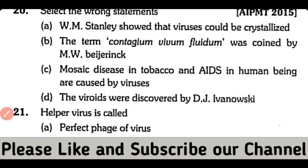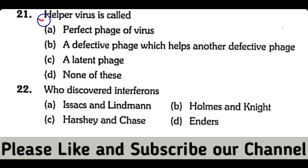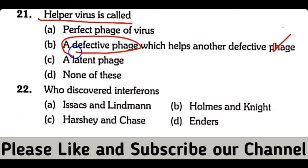Question number 21. Helper virus is called: a perfect phage of virus, a defective phage which helps another defective phage, a latent phage, or none of these. So the correct answer is option B. Helper virus is basically a defective phage which helps provide functions to another defective phage.